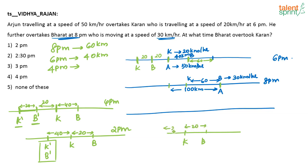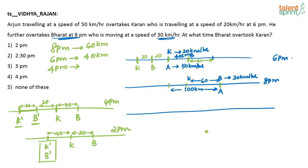One hour before 4 p.m., Karan would have travelled 20 km and Bharat would have travelled 30 km, so the distance between them would be 10 km — it cannot be 0. Basically, what we are doing is backtracing. There is no other concept involved. All you need to know is the distance travelled by each person in a given number of hours.